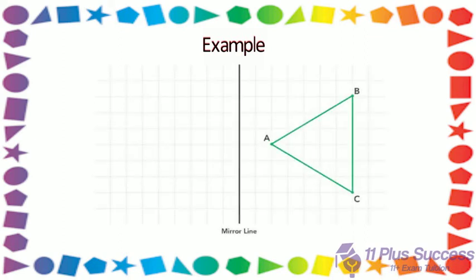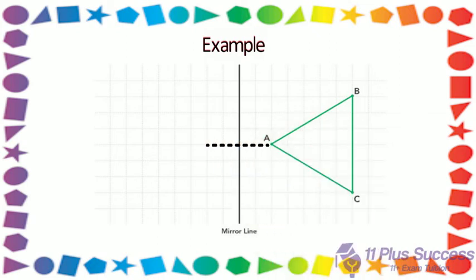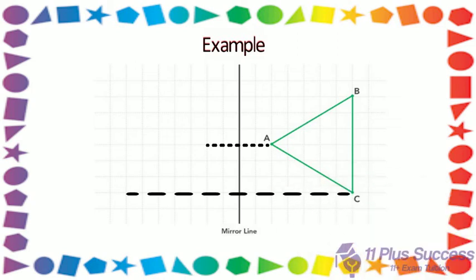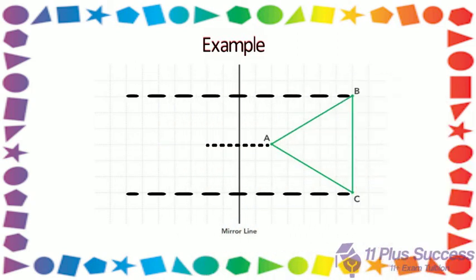As we know, the mirror image is always the same distance as the original image, so an object and its image are always at the same perpendicular distance from the mirror line.